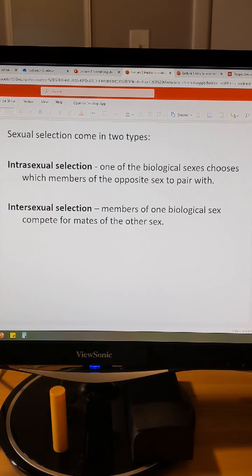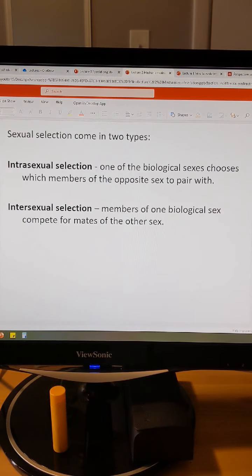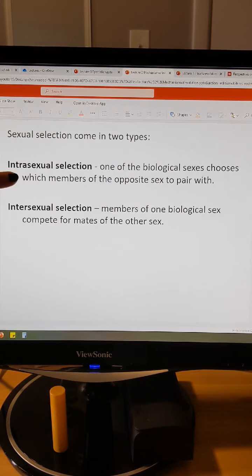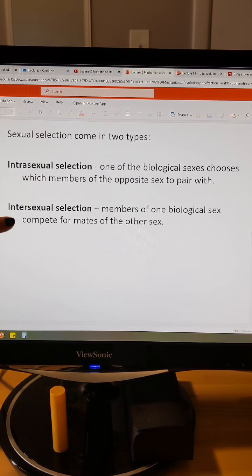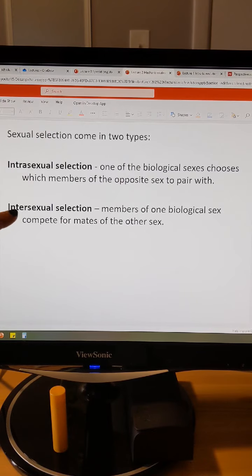In sexual selection, we have two types. We have intrasexual selection, and we have intersexual selection. So in intra, this is when one of the sexes, the male or the female, chooses who they want to mate with. This is females choosing the male with the biggest tail feathers, or females choosing the male with the best mating call. Intersexual selection is competitions between one sex. So males competing for females, like lions do this, elephant seals do this, different deers do this. So that would be inter, because it's within one sex competing for mates.